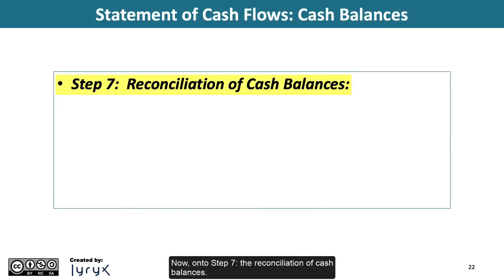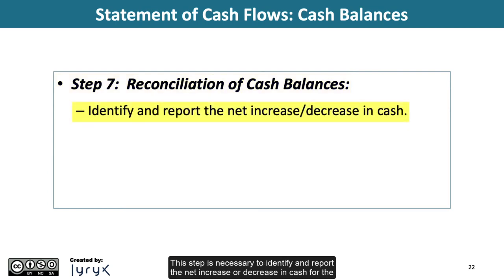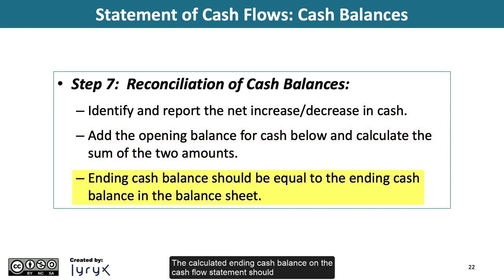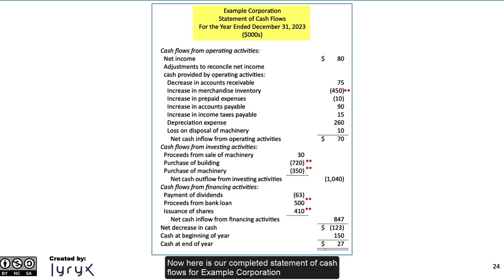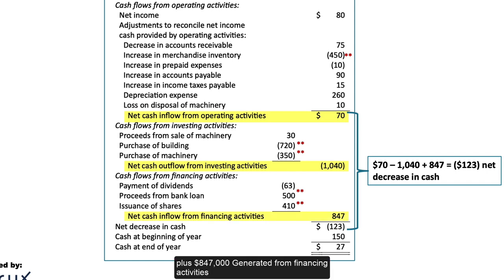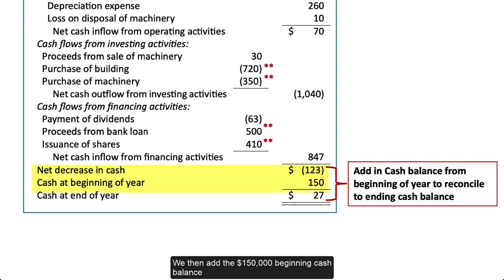Now on to Step 7: the reconciliation of cash balances. This step identifies and reports the net increase or decrease in cash for the period, to which we add the opening cash balance and calculate the ending balance. The calculated ending cash balance should equal the ending cash balance on the balance sheet — if not, errors were made in a previous step. Adding the subtotals: $70,000 from operating, minus $1,040,000 from investing, plus $847,000 from financing gives a net decrease in cash of $123,000. Adding the $150,000 beginning cash balance gives an ending cash balance of $27,000, which agrees with the balance sheet.